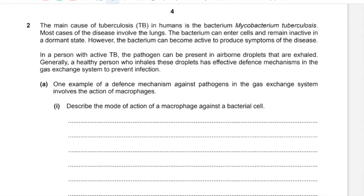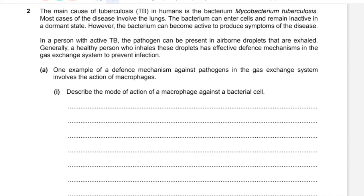Question 2. The main cause of tuberculosis in humans is Mycobacterium tuberculosis. Most cases of the disease involve the lungs. The bacterium can enter cells and remain inactive in a dormant state, but it can become active to produce symptoms of the disease. In a person with active TB, the pathogen can be present in airborne droplets that are exhaled.